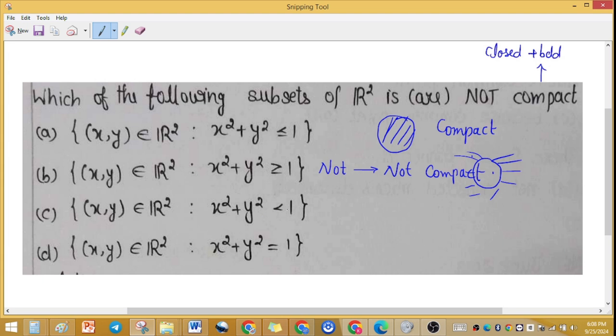Option C, x² + y² < 1, represents only the interior of the disk. This is bounded, but to be compact it should also be closed. Since it's not closed, it's not compact. So this will also be our answer.